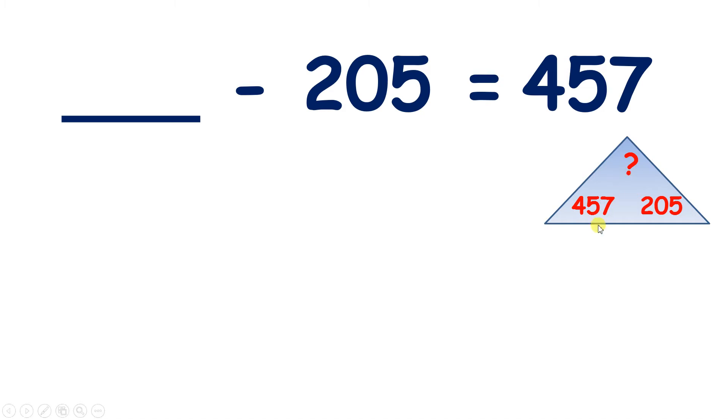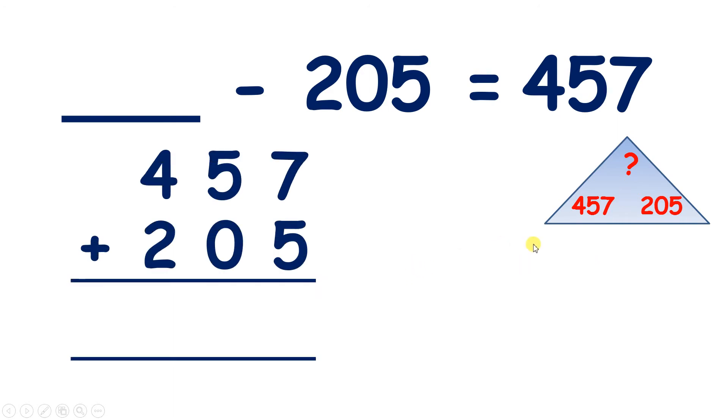Well, we know that if we add the two bottom numbers together, we get the top number. So we can work out 457 plus 205 to find our missing number. This is sometimes called using the inverse operation, because we have a subtraction, but we're using addition to find our answer.